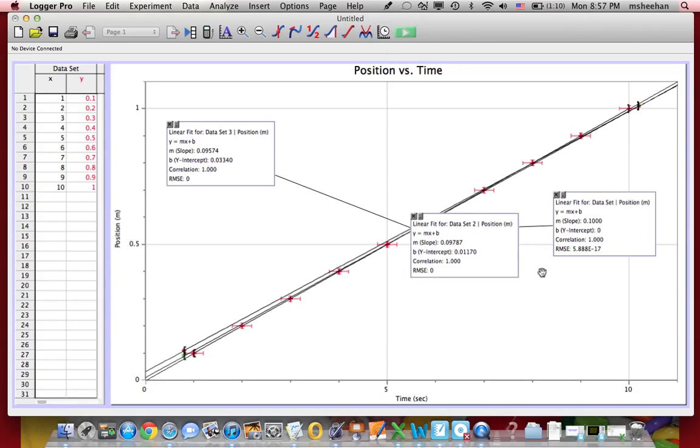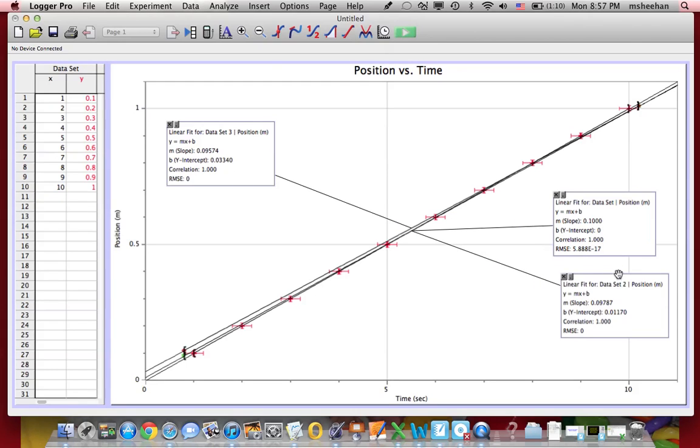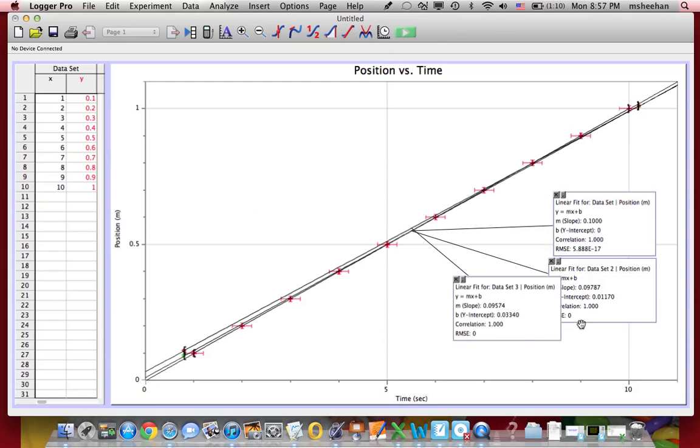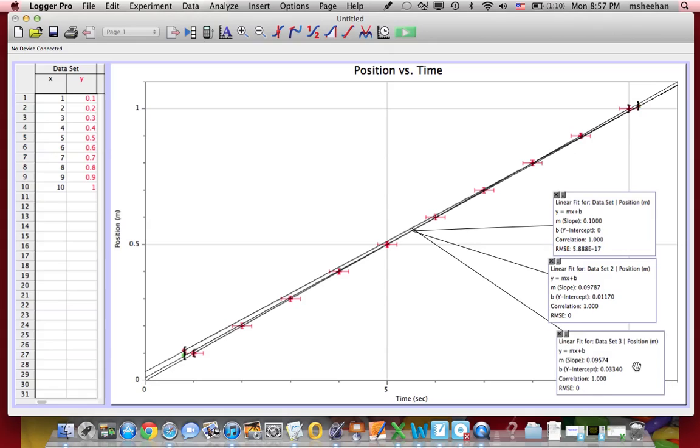So you can see that you have three slopes of lines available to you. The first one, data set 1, is your data. So that's the trend for your data. Data set 2 are the green points, and those are your maximum error. And then the diamonds are your minimum error.